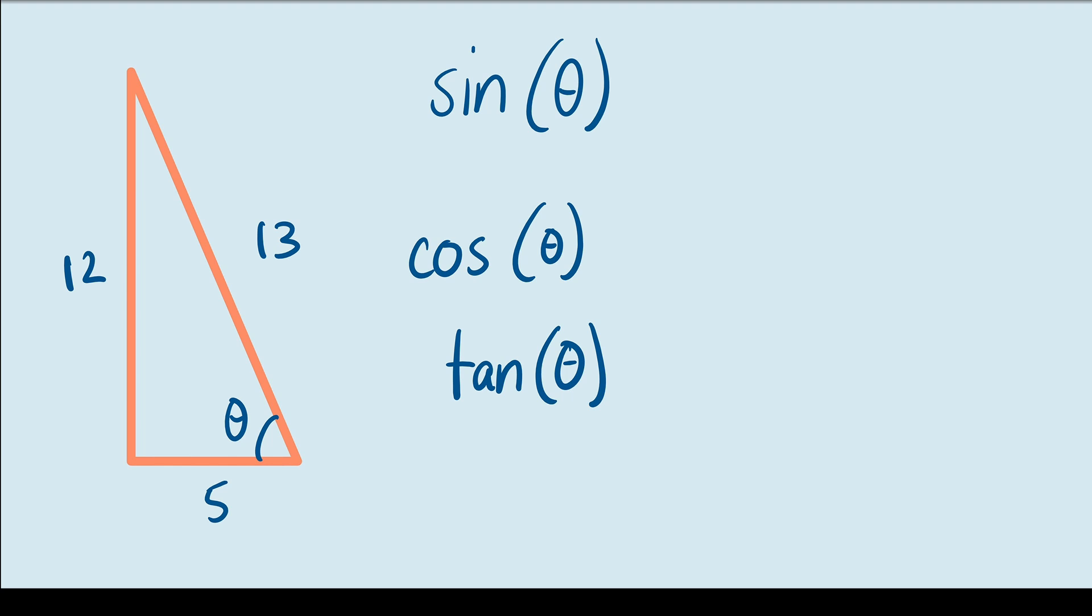Sine of this angle is going to be opposite over hypotenuse. So, that's 12 over 13. Cosine of that angle is going to be adjacent over hypotenuse. So, that's 5 over 13. And finally, tangent is going to be opposite over adjacent. So, that's going to be 12 over 5.